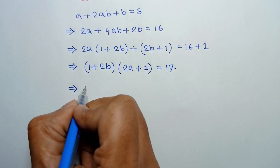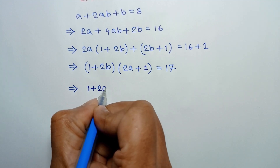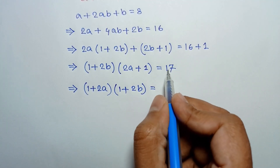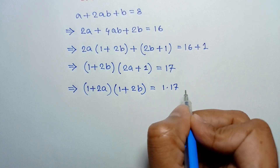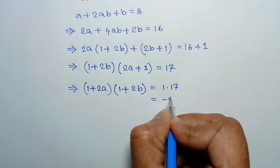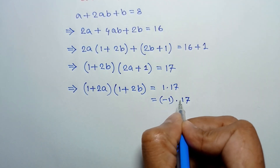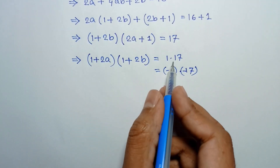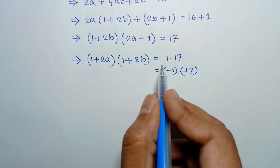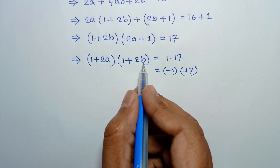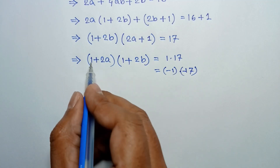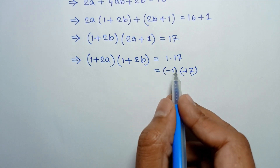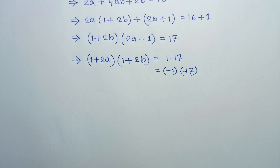Taking common 1 plus twice b, we will have 1 plus twice b times twice a plus 1 is equal to 17. Rearranging it, we can write 1 plus twice a times 1 plus twice b is equal to 17, which can be written as 1 times 17, or negative 1 times negative 17. Comparing left and right side, we get the factor pairs for each case.